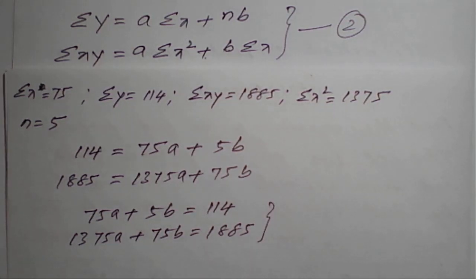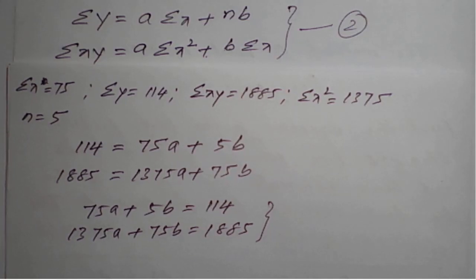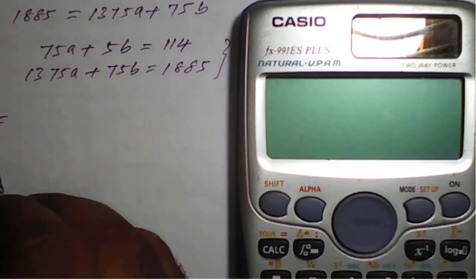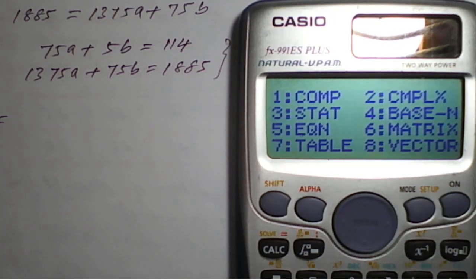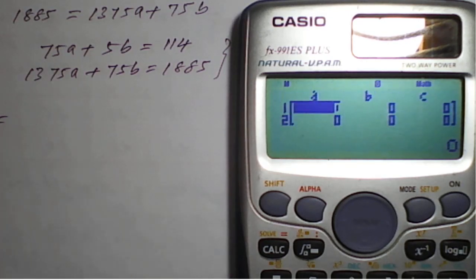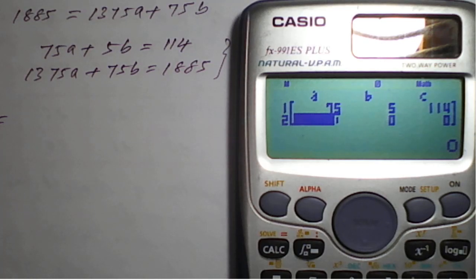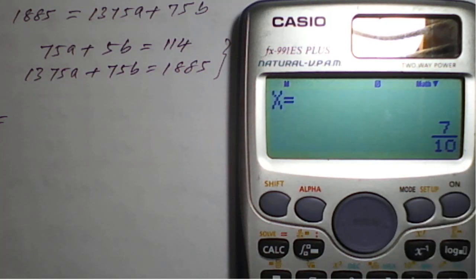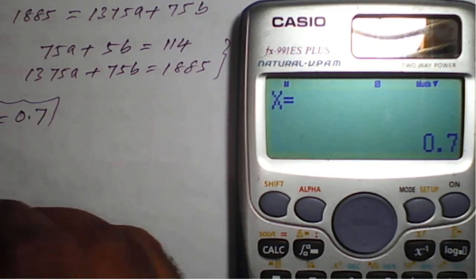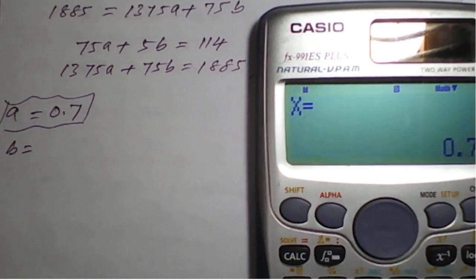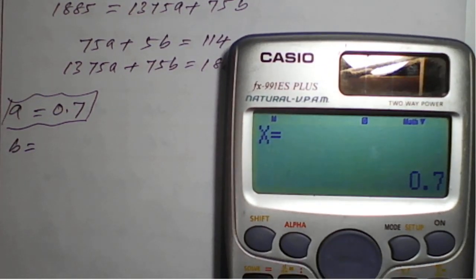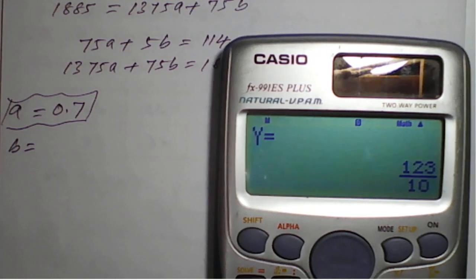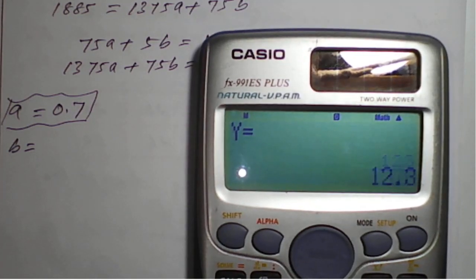On solving this equation using a calculator, we will get the values of a and b. Again putting the equation mode, the values are: first equation 75, 5, 114; second equation 1375, 75, 1885. The value of a we get is 7 upon 10, which is 0.7. Similarly, applying the equal sign one more time, the value of b is 123 upon 10, that is 12.3.